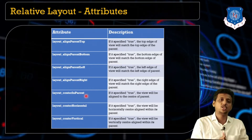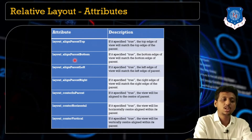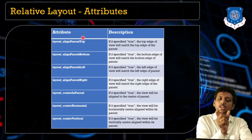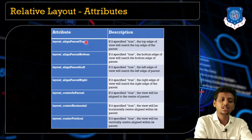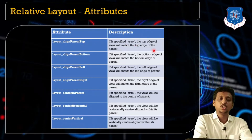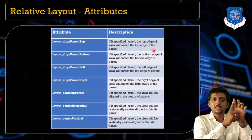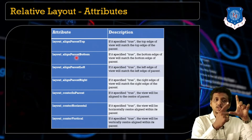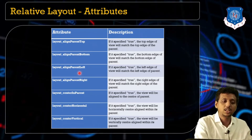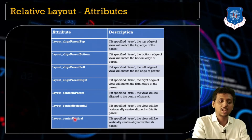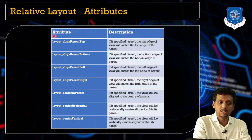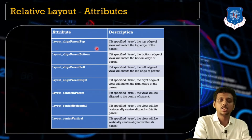Now let's look at the attributes of Relative Layout. There are many attributes you can set. The first one is layout_alignParentTop — this aligns your view component at the top of the parent. It returns a boolean value (true or false). If set to true, the top edge of the view will match the top edge of the screen. For layout_alignParentBottom, the bottom edge of the view matches the bottom edge of the parent. For layout_alignParentLeft set to true, the view will match the left edge of the parent.